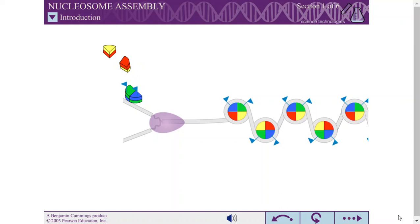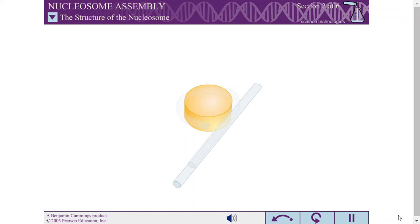The nucleosome consists of a histone core wrapped with a 147 base pair length of DNA. Specialized proteins called histones form a spool or disc onto which the DNA is wrapped.